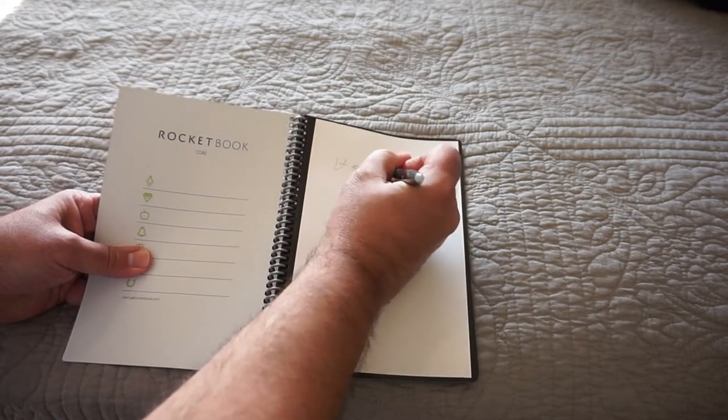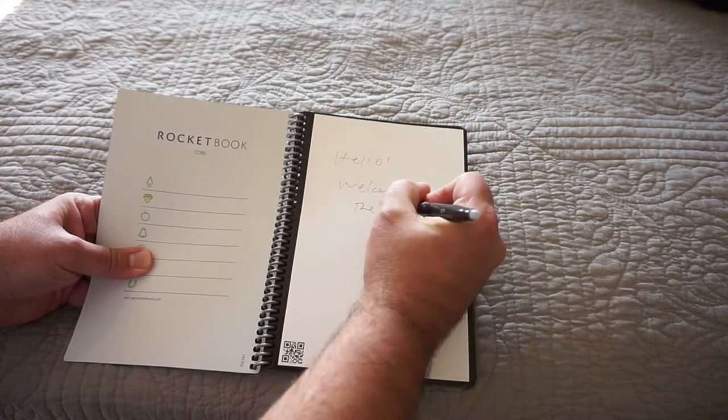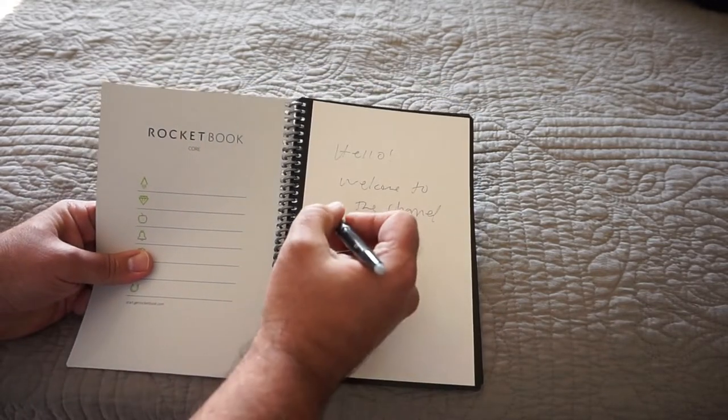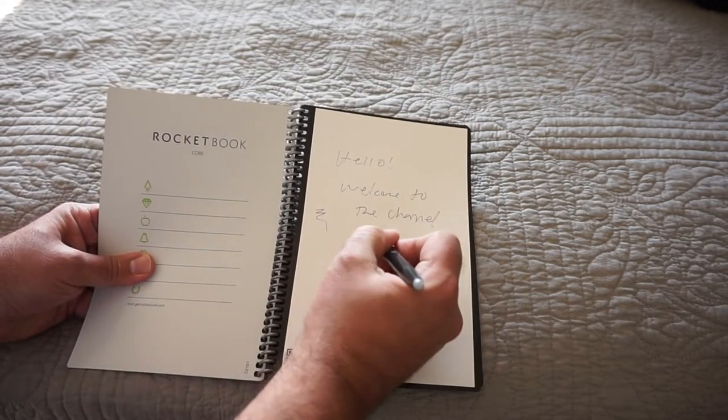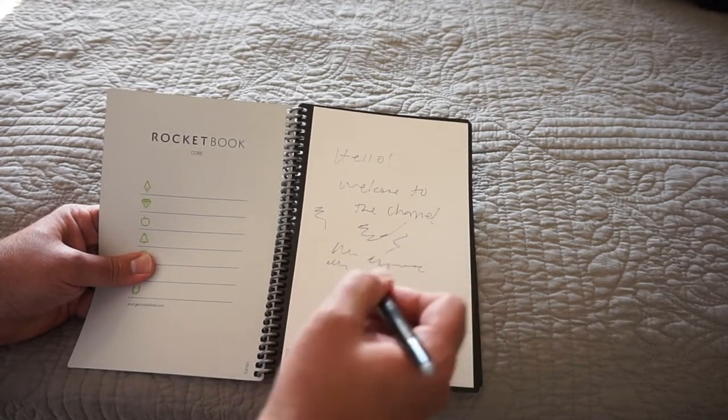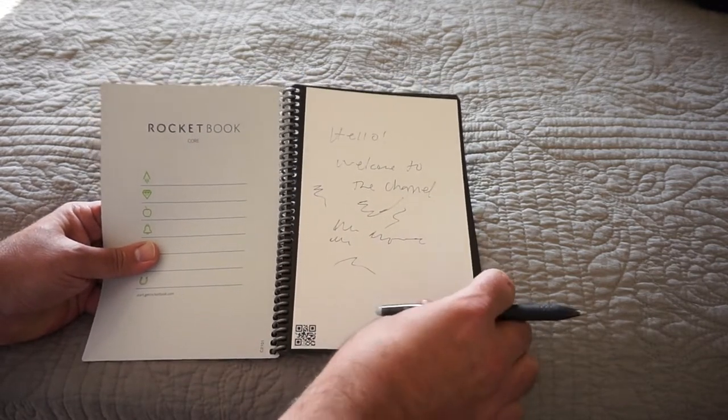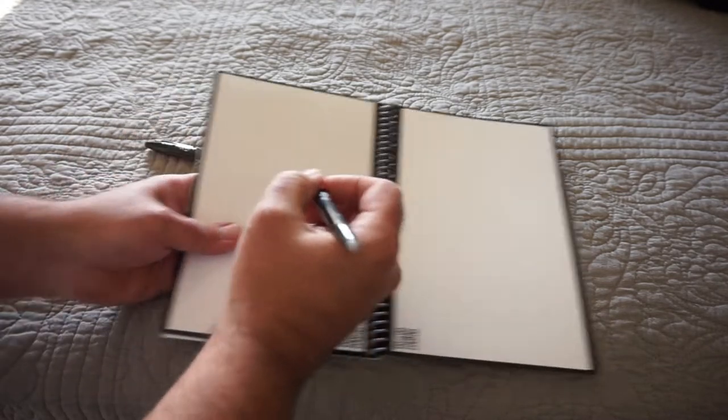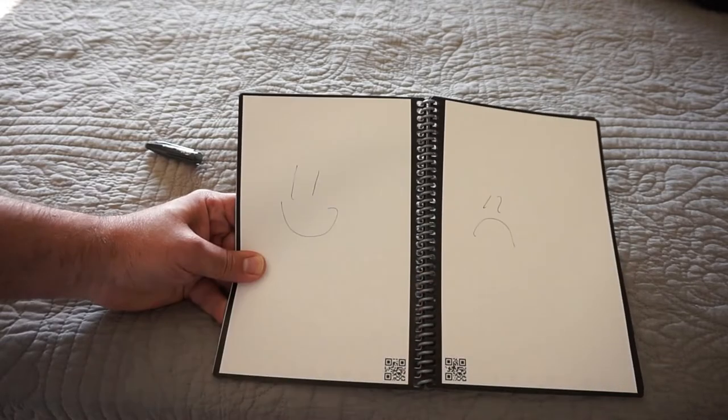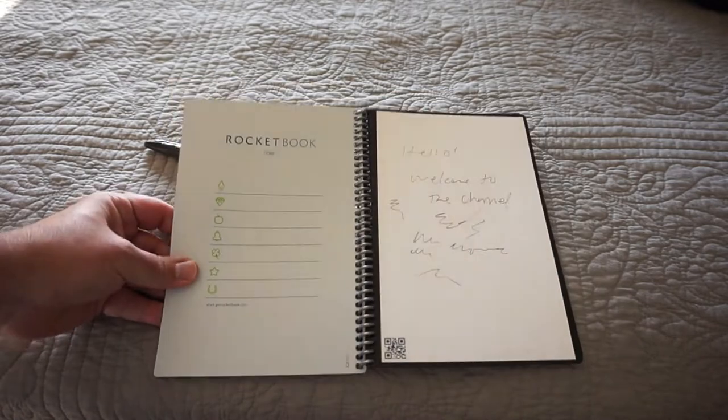Let's just go ahead and write something down. We'll put, hello, welcome to the channel. You've got to forgive me, my handwriting is absolutely atrocious. Real easy to write. It flows well. It seems like you can kind of control how dark your color is when you're writing by the angle that you're holding at. The pen is really comfortable to use. Let's just do a little smiley face on this one, do a little frowny face on this one. And what we'll do is go ahead and show you and learn together how the app actually works.